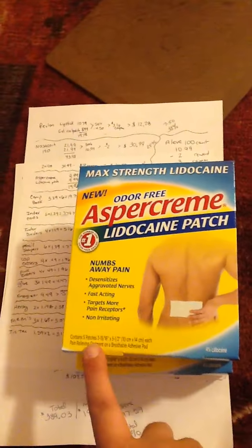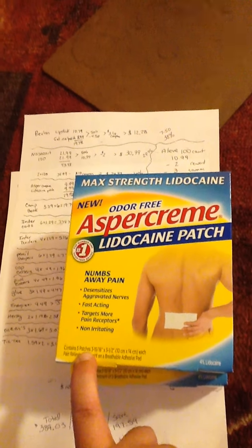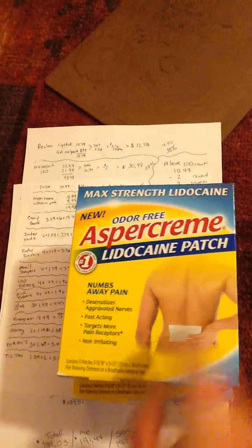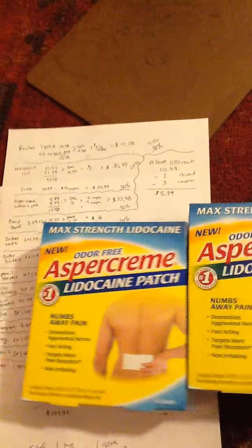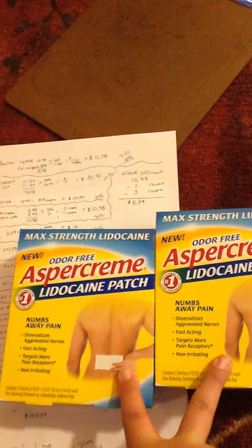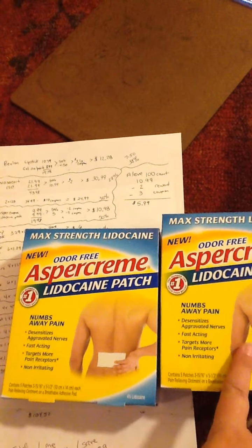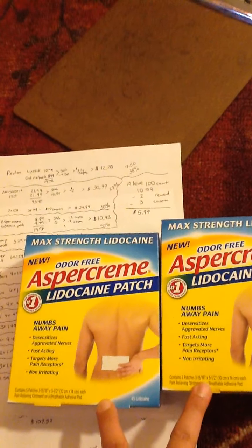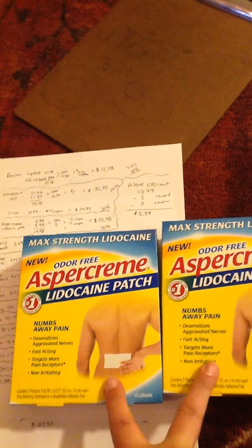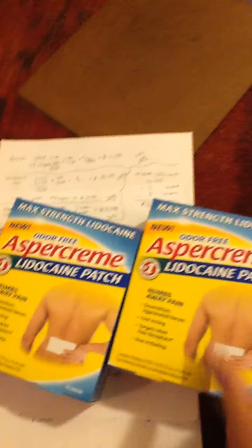Then they had the Aspercreme Pain Patches, a 5-pack. They're normally $9.99 but they're on a buy one get one 50% off reward. I had two $2 off coupons in the circular. So two boxes at $19.98 came down to $10.98, a 50% savings.